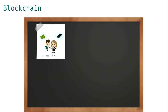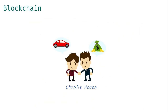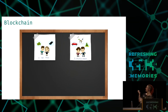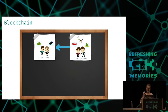Somewhat later, we observe another trade. Charlie wants to sell his car to Peter. Again, we take a picture — but this time we hold the picture from before, the one already on the blackboard, into the background of this situation. We take the new Polaroid picture and put it back on the blackboard. Now we can see: the first picture, which is our first block, appears in the background of the second picture — which is our second block. So the second block is chained to the first block. If someone evil wants to change the content of the first block, he must also change the content of the second block, which means more effort for the evil party.